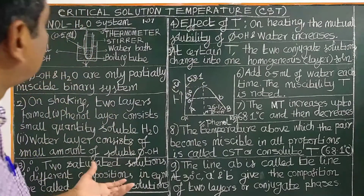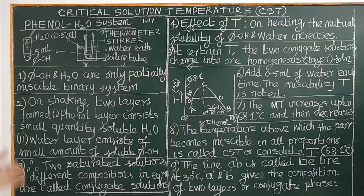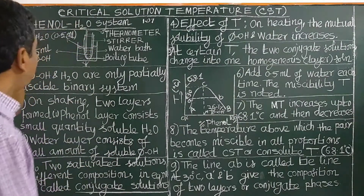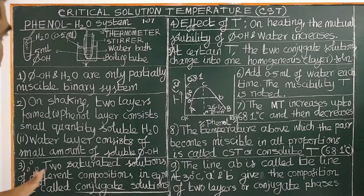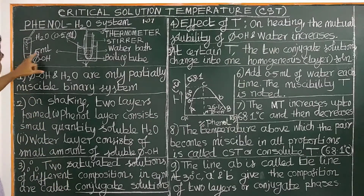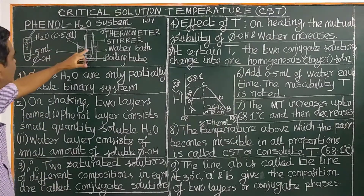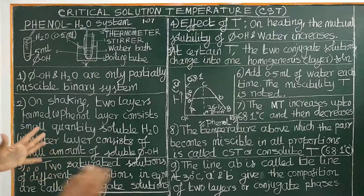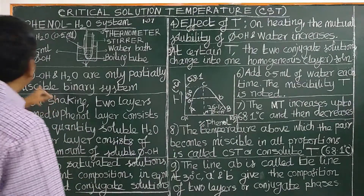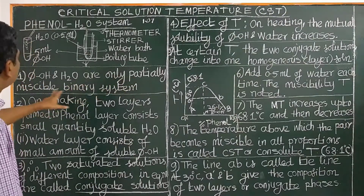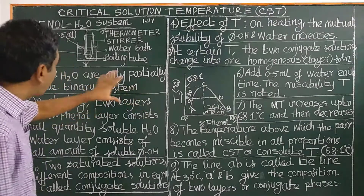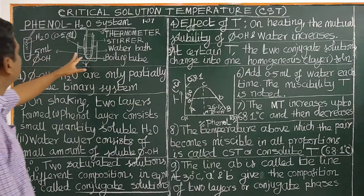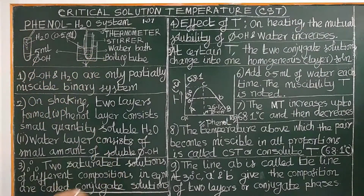Let us consider a partially miscible system. For example, phenol and water is a partially miscible system. What do we mean by a partially miscible system? If you take phenol and add water, the two will form separate layers. Phenol and water form a partially miscible binary two-component system.